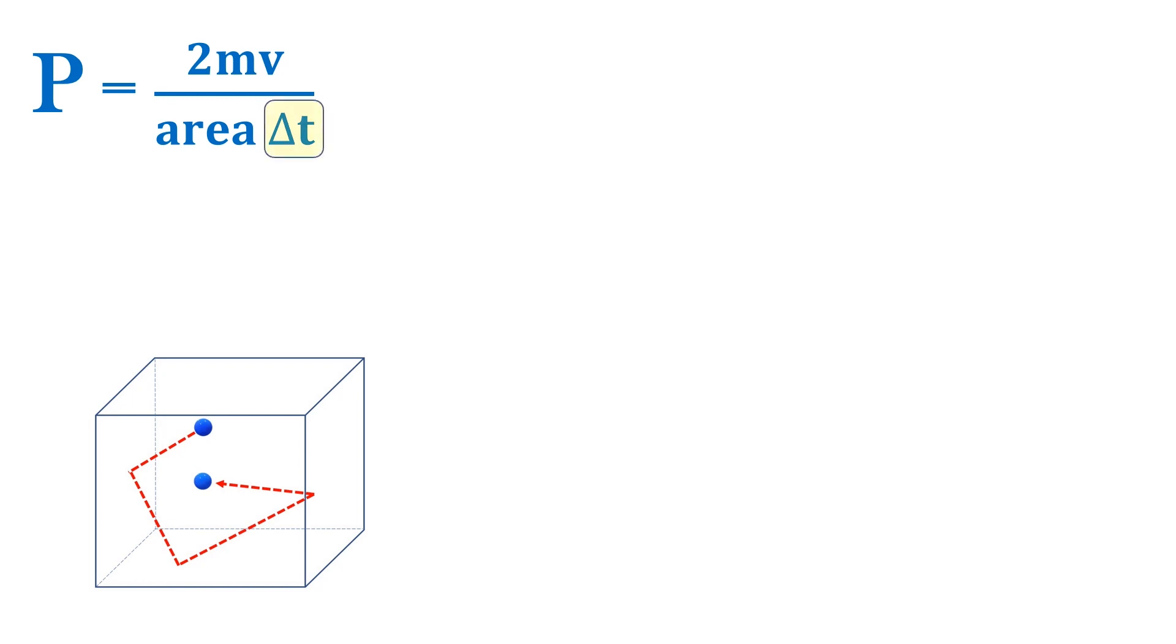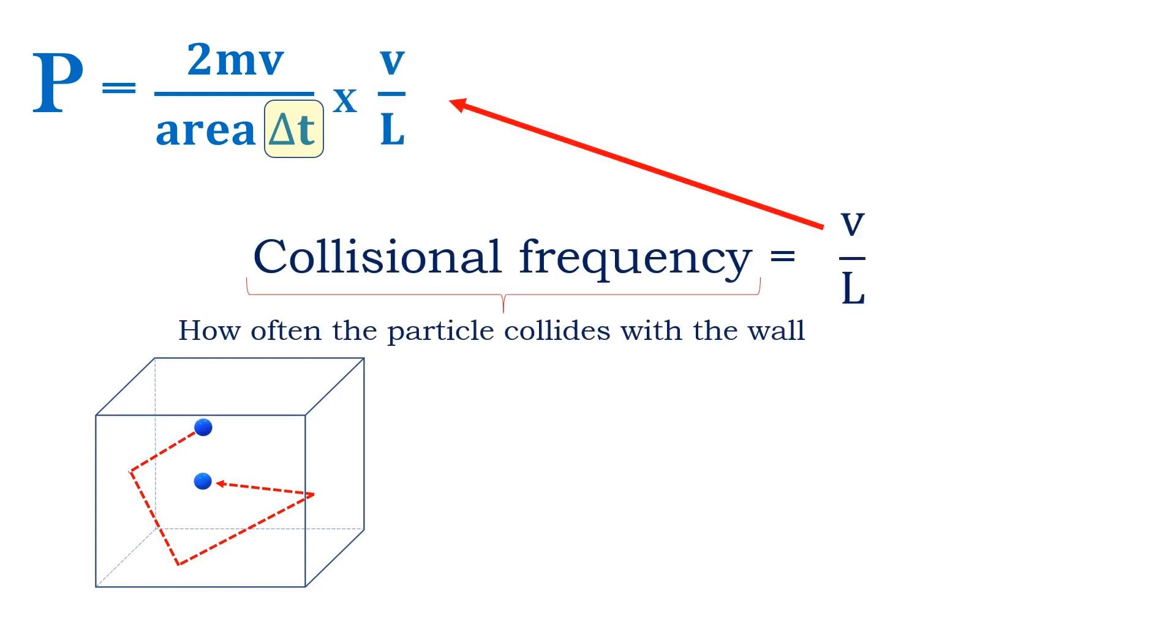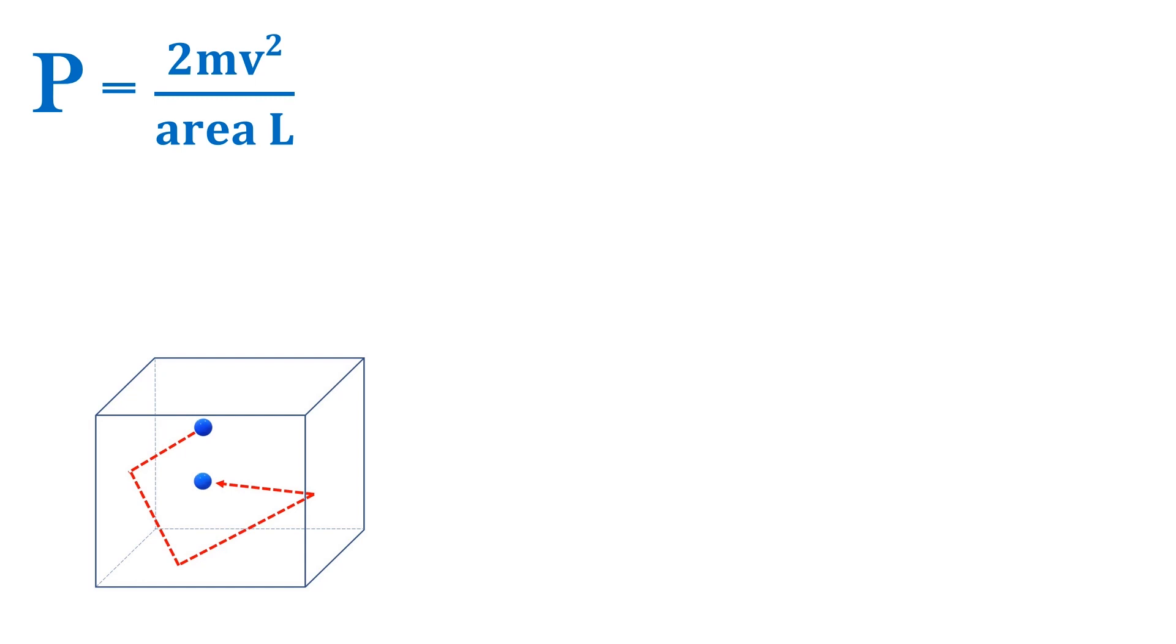Now let's resolve the change in time. Kinetic molecular theory does something clever here, to account for the change in time, by multiplying the equation by the collisional frequency. This is how often the particle collides with the wall. The particle in the image is traveling with some velocity, and will eventually collide with the wall of some length L. The collisional frequency is v over L. So let's multiply the collisional frequency and remove the change in time. Here's the updated equation.